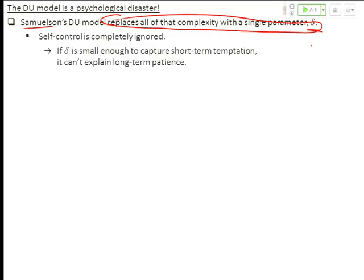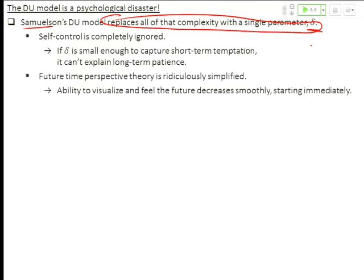Here's what happens in the DU model. Samuelson comes along, and he basically replaces all of that psychological complexity with a single parameter, delta. Just boils it all down to delta. Self-control is completely ignored. If delta is small enough to capture short-term temptation, it can't explain long-term patience. So this model completely ignores impatience. Future time perspective theory is ridiculously simplified. It assumes that your ability to visualize and feel the future decreases smoothly starting now. It isn't true for me.